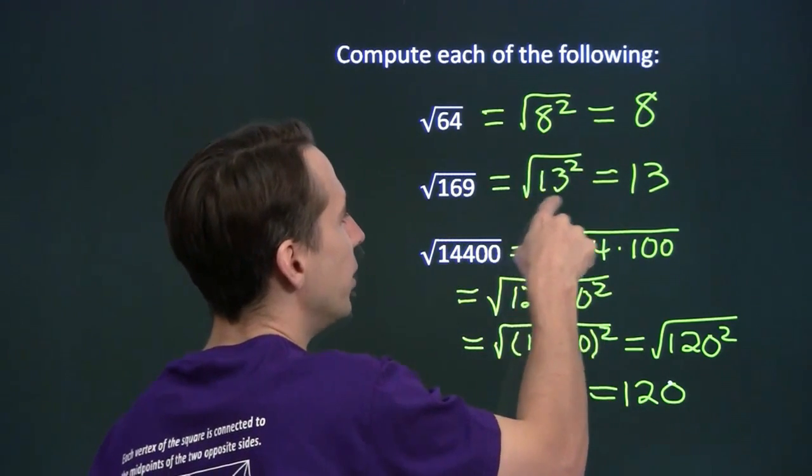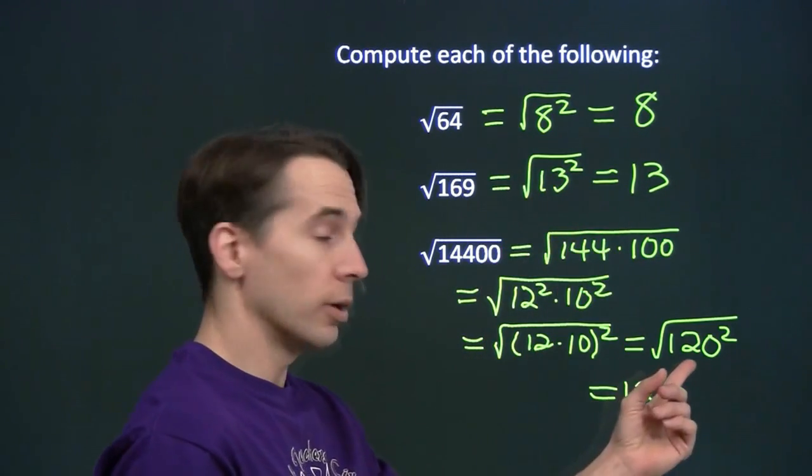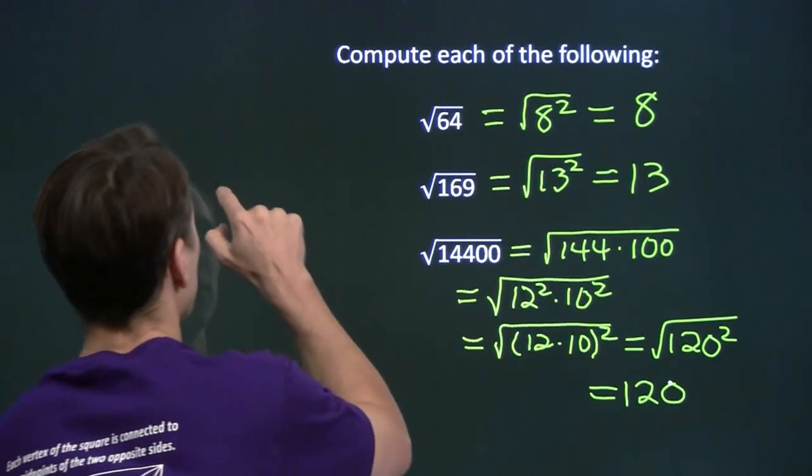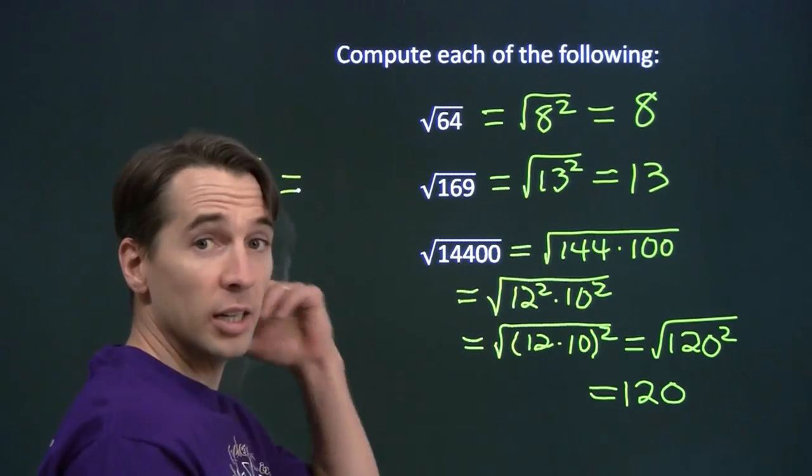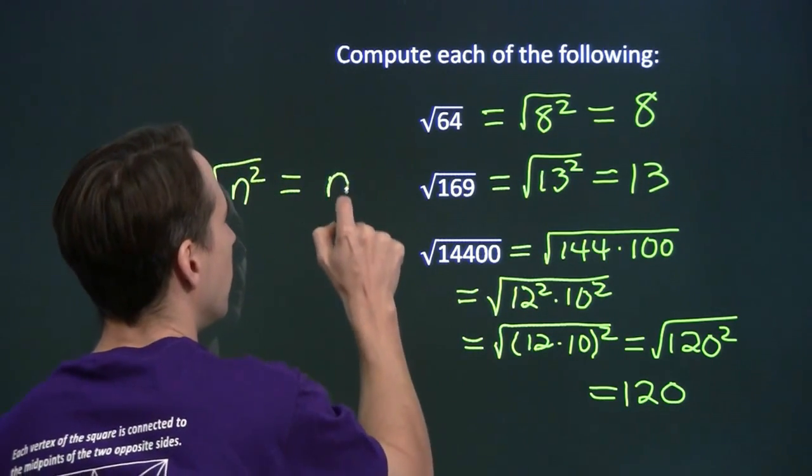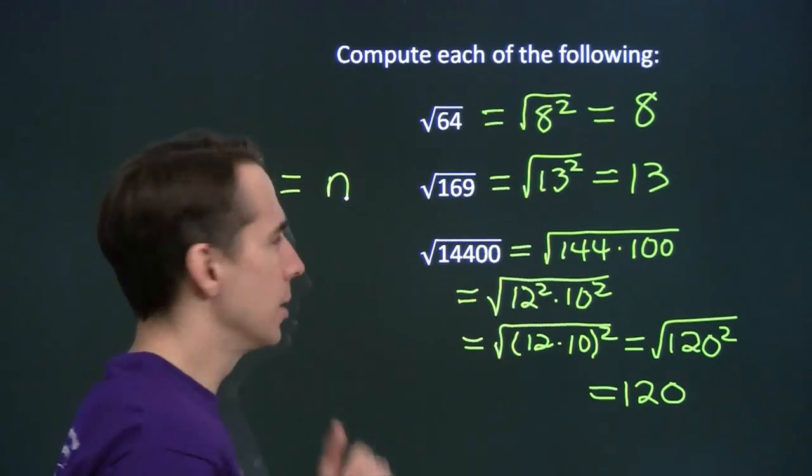Check that out. See a little pattern there. Square root of 8 squared is 8. Square root of 13 squared is 13. Square root of 120 squared, that's 120. So of course, the square root of n squared, if n is nonnegative, is always going to be n. And that makes sense because you square n to get n squared.